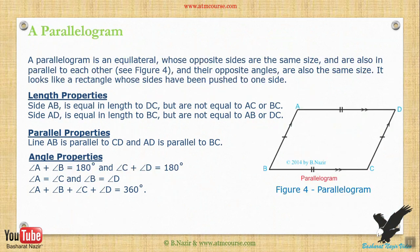Properties of a parallelogram: a parallelogram is a shape whose opposite sides are the same size and are parallel to each other, and whose opposite angles are also the same size. See figure 4. It looks like a rectangle whose sides have been pushed to one side. Length properties: side AB is equal in length to DC, but not equal to AD or BC. Side AD is equal in length to BC, but not equal to AB or DC. Parallel properties: line AB is parallel to CD, and AD is parallel to BC.